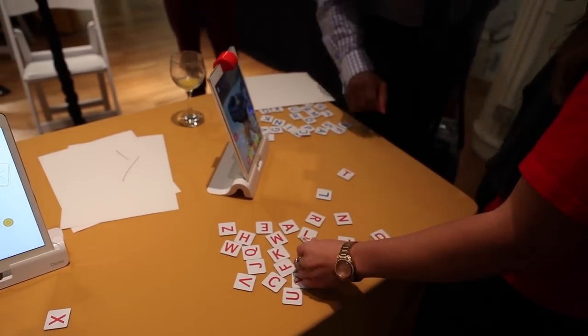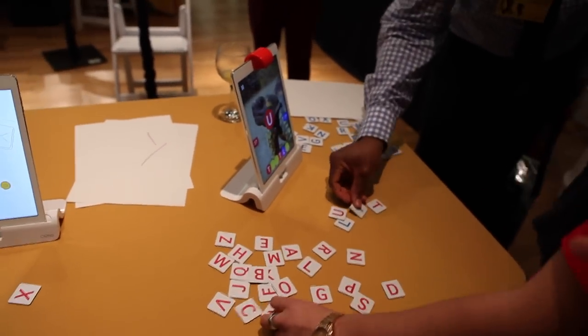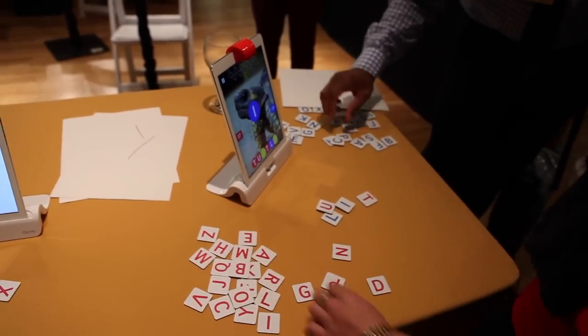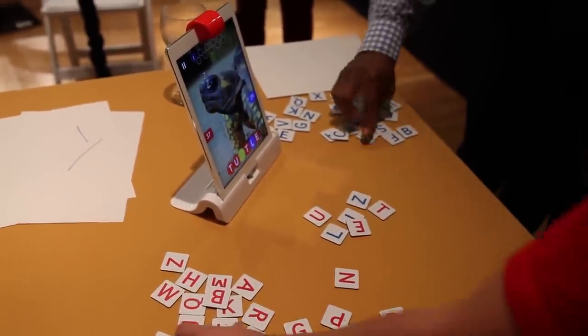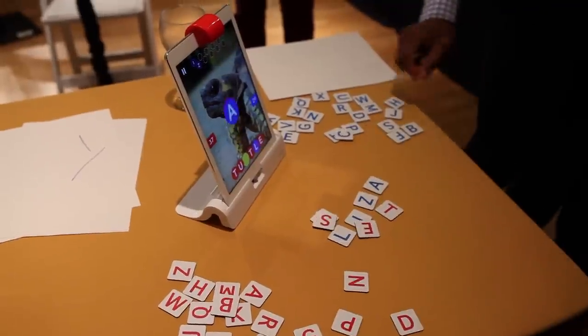So the objective here is to guess the word in yellow, and the picture is a hint. And you race your opponent, so red versus blue, you're trying to guess as fast as possible. So I think this one's turtle, so someone needs to throw out an R.